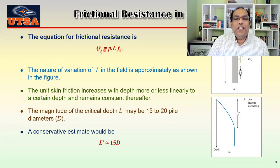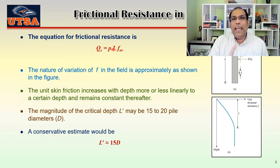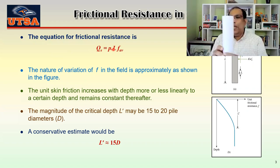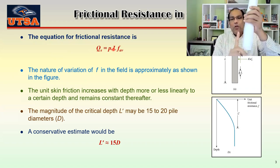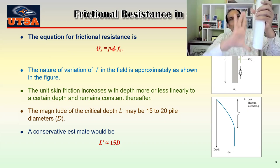The equation for frictional resistance is Qas equal to P times L times Fav. Fav is the frictional resistance per square feet area of the contact surface, where P is the perimeter and L is the length. So perimeter times length gives basically the area in which the frictional force will be working. The frictional force works along the surface of the pile.